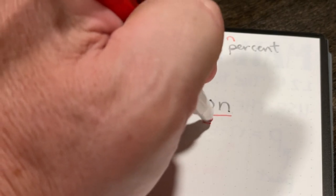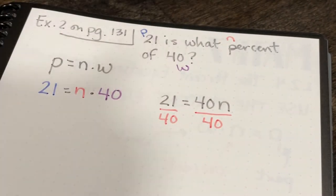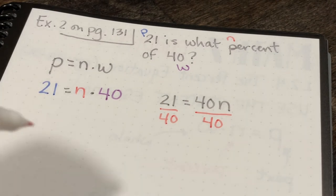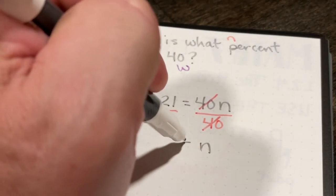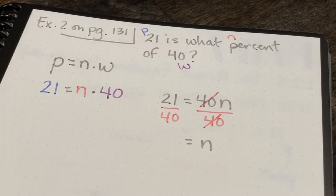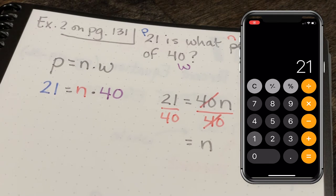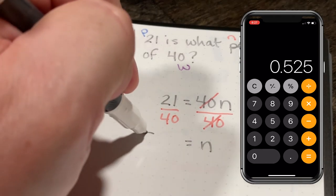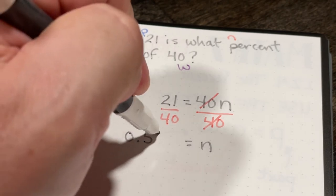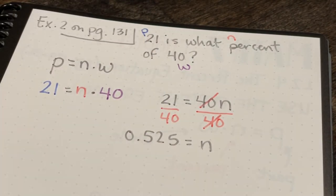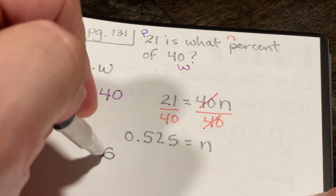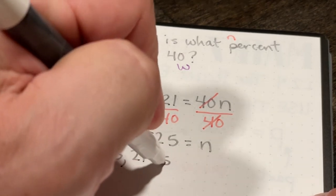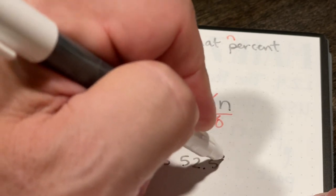So I'm going to divide both sides by 40, which is the coefficient of n, and 40n divided by 40 will just be n. And 21 divided by 40 is going to be 0.525. So in this problem, since I'm looking for a percent, I can say that 0.525 is equal to 52.5%.